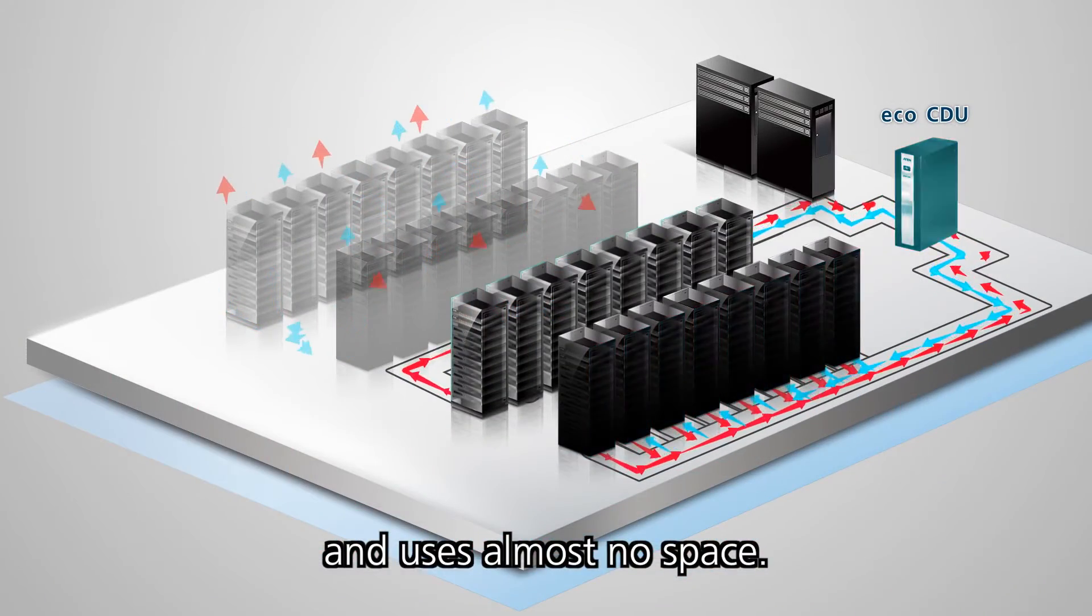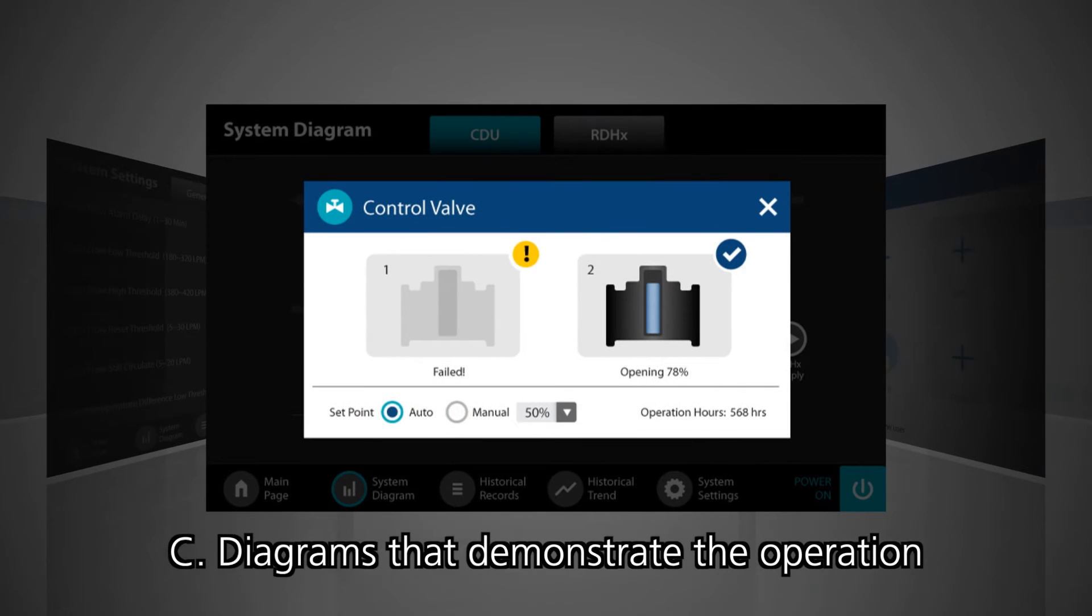The RD-HX mounts easily to the rear of any standard server rack and uses almost no space. The CDU has an interface that provides: A. A simple touchscreen menu B. Precise CDU and RD-HX status information C. Diagrams that demonstrate the operation and provide settings for each loop, such as the control valve, heat exchanger, and secondary pump.